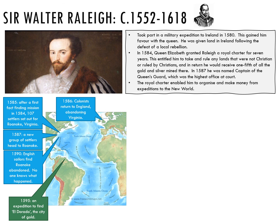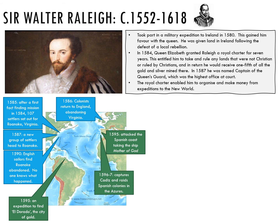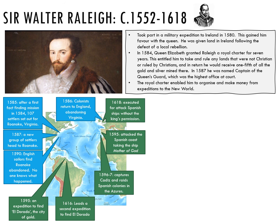In 1595, Sir Walter Raleigh led an expedition to the Orinoco River basin in South America in search of the city of gold, El Dorado. Also in 1595, he attacked the Spanish coast, capturing the merchant ship the Mother of God. Between 1596 and 1597, he took part in the capture of Cadiz, as well as raiding Spanish bases in the Azores. In 1616, he led a second expedition to South America in search of El Dorado, and was then executed in 1618 for attacking Spanish shipping without the King's wishes.